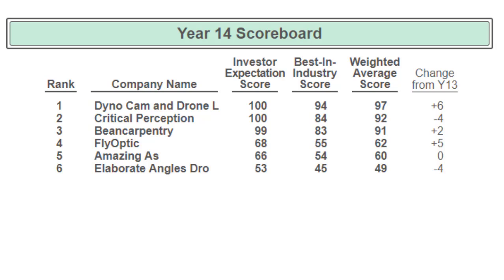Company F gained five points and is in fourth place, jumping over A and E. Company A stayed even — which I'd prefer over losing — because Company E lost four points, which they could not afford. They're at a record low of 49 points in the year 14 scoreboard, the lowest I have ever seen. Clearly they're not getting any points this year for their decisions.